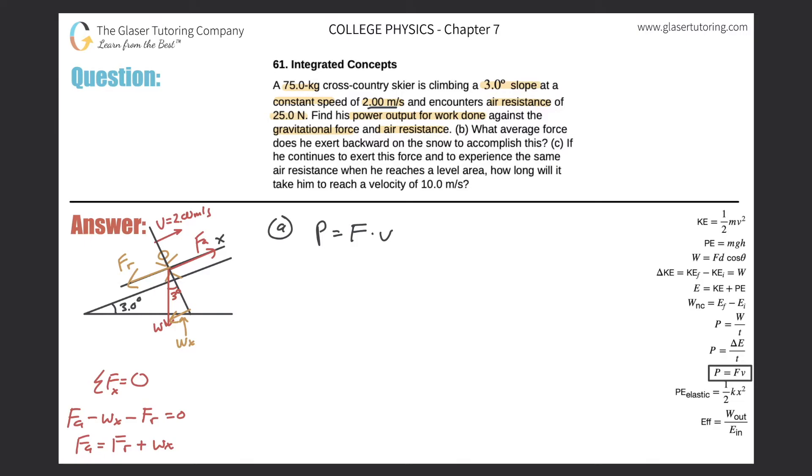We would have to use sine, correct? So if I set up my trig here, it'd be sine of three degrees is equal to w sub x over the weight. And therefore, the w sub x should equal the weight times the sine of three degrees.